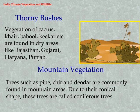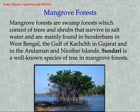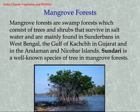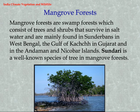Due to their conical shape, mountain trees are called coniferous trees. Mangrove Forests: Mangrove forests are swamp forests which consist of trees and shrubs that survive in salt water. They are mainly found in the Sundarbans in West Bengal, the Gulf of Kutch in Gujarat, and the Andaman and Nicobar Islands. Sundari is a well-known species of tree in mangrove forests.